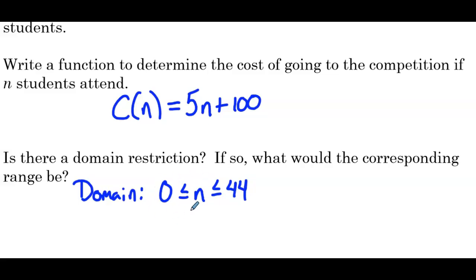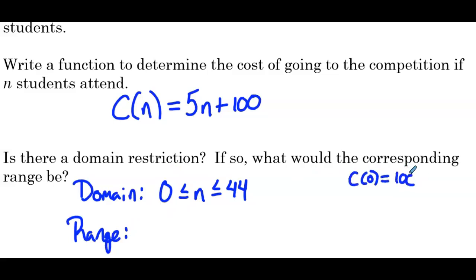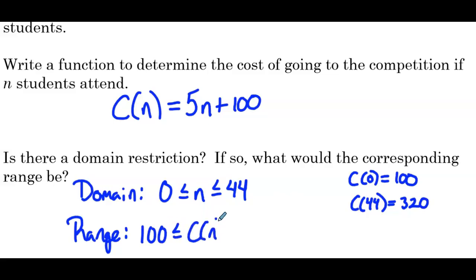Does it really make sense to take 0 students? Not really, but it's a potential outcome. It definitely doesn't make sense to take negative students, and we can't take more than 44. What would the corresponding range be? If we input 0, output is 100. If we input 44: 5 times 44 is 220, plus 100 is 320. So our range is 100 ≤ c(n) ≤ 320.